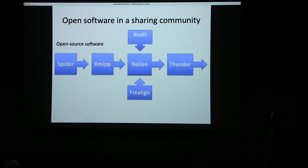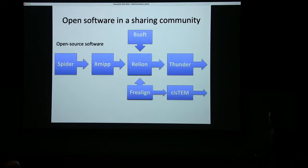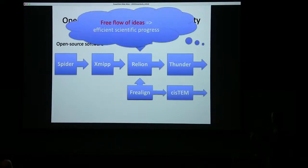For me it was satisfying to see that by keeping our software open source — which is what all these packages have in common — it then led to a new program in China by Xinming Li at Thunder. And hopefully because Thunder is open source, other people can build on that. It's great that FREALIGN, made by Richard Henderson and then Niko Grigoryev, now has another line in the family tree of cryo-EM software. It's great you guys have been able to attract Tim here, because having the ability to do software development in-house makes you so much more flexible when new problems come up, rather than relying on just standard out-of-the-box solutions. Open software and sharing of ideas has underpinned much of the rapid progress the field has made in the past decades: free flow of ideas leads to efficient scientific progress.